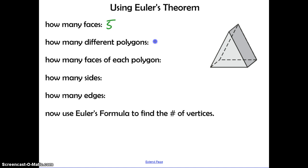And the question is how many different polygons. We have two triangles, and then we have three rectangles. And how many faces of each polygon? So we have two triangles. Each triangle has three sides. So we have a total of six sides here. We have three rectangles, four sides on each rectangle. So that's going to be a total of 12. Now when you add those together, you get a total of 18 sides.